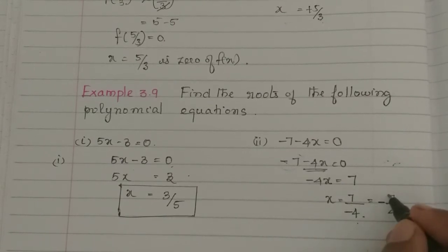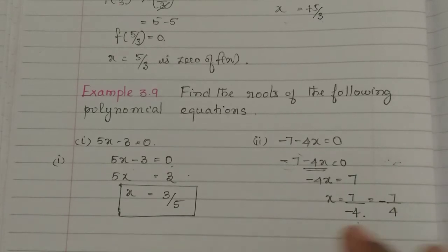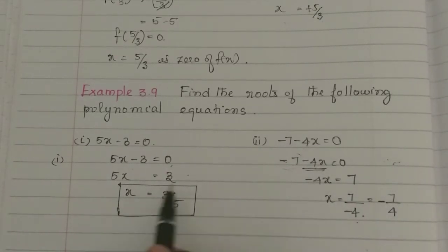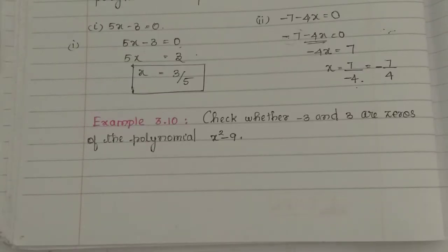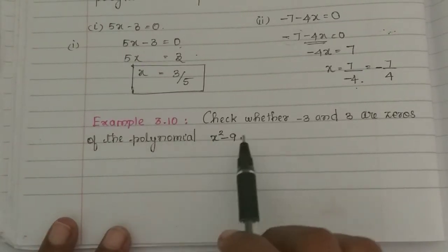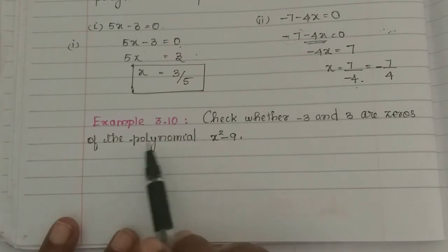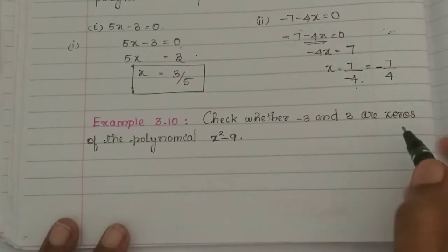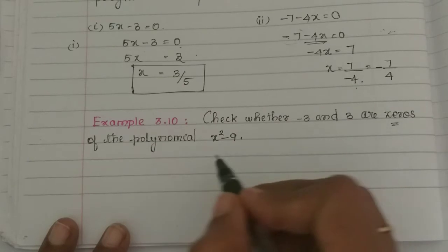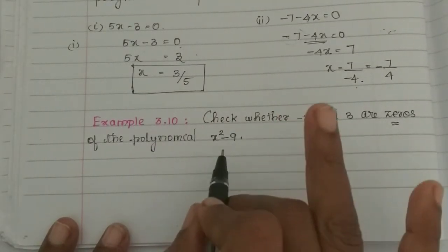So x equals minus 7 by 4. Therefore, the roots are x equals 3 by 5 and x equals minus 7 by 4. For example 3.10: check whether minus 3 and plus 3 are zeros of the polynomial.